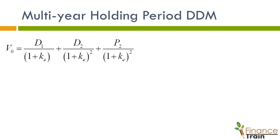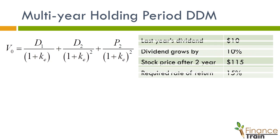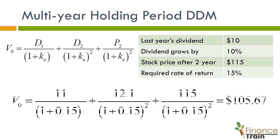Let's take the same example, but this time assume that the investor holds it for 2 years. The dividend continues to grow by 10% and the investor is expecting to sell the stock for $115 after 2 years. Assuming a required rate of return of 15%, the current value of the stock will be $105.67.